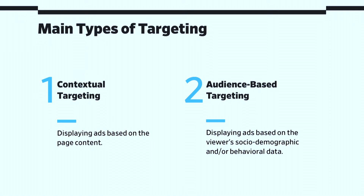It could be the content, it could also be the skew of the page, whether it's positive or negative kind of sentiment. Audience targeting is based around data — it's based upon what you know about the user through deterministic user profiles and through probabilistic data sets as well. Both of these play into hyper-personalization and how an advertiser can use them effectively to target users.